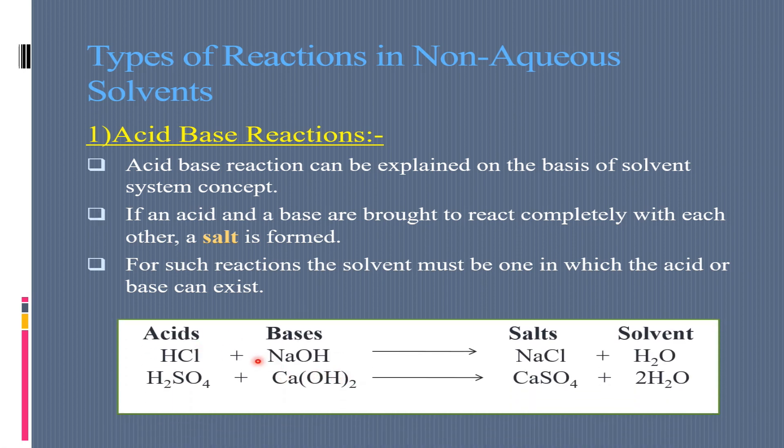These are the examples, and this is the very common example we know. HCl plus NaOH gives NaCl plus water. You can see that these are acids, these are bases, and these are salts, and then this is the solvent. In acid-base reactions, we will get the salt of calcium sulfate plus two water molecules.